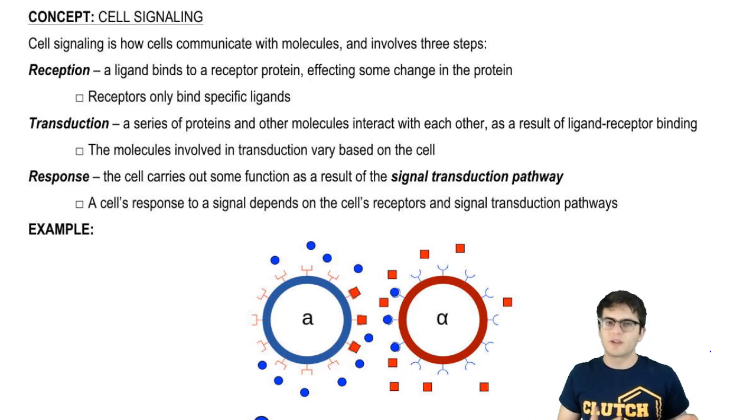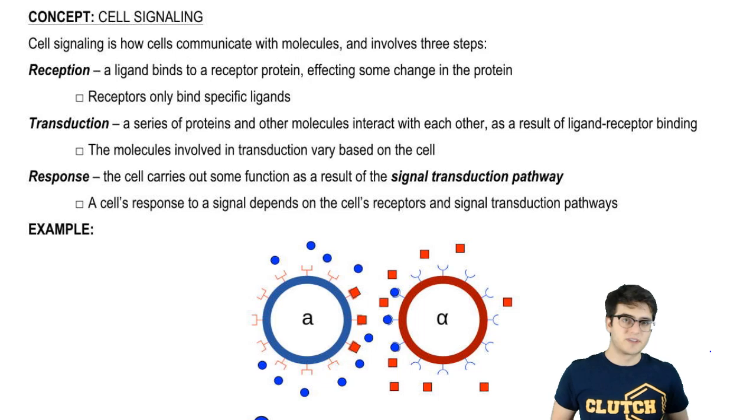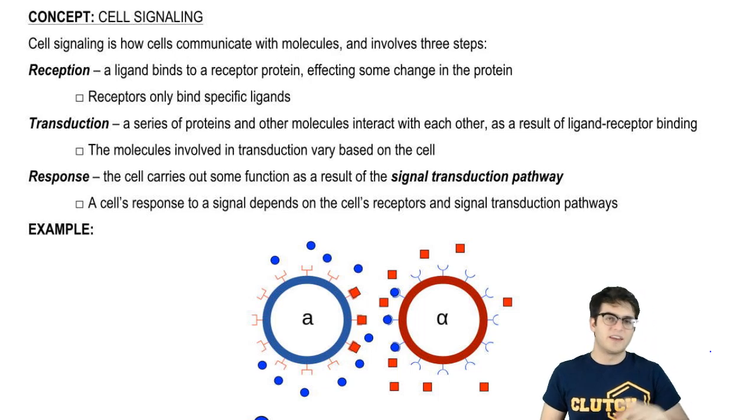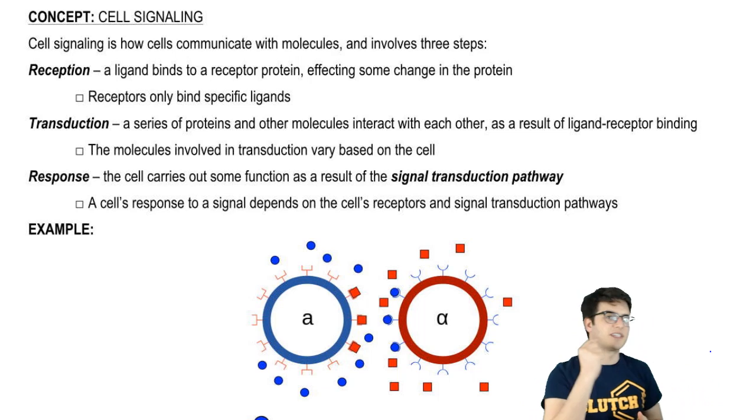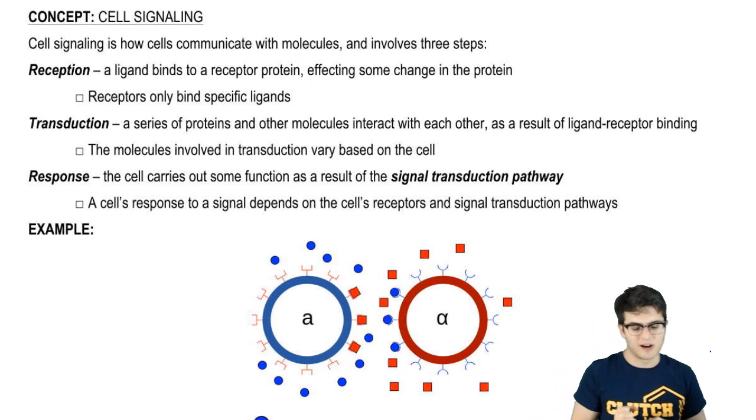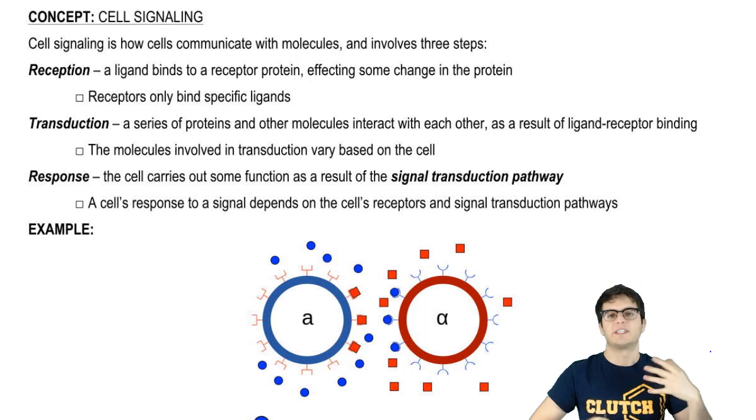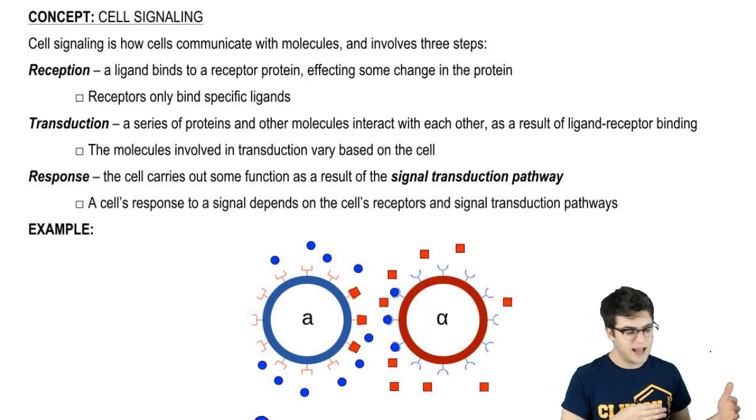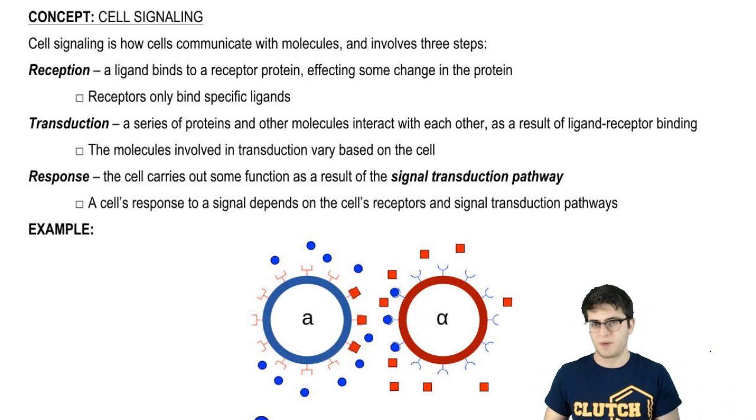Well, cell signaling follows a similar pattern. Cells will use molecules, and they'll use those as a signal, and those are picked up by receptors. That's just like the sound from my voice hitting your ear. Then, once the receptor has that molecule bound to it, then there will be some sort of transduction. The message will be conveyed through various other molecules in the cell, until ultimately the cell carries out some response.